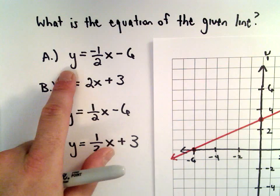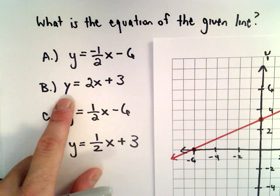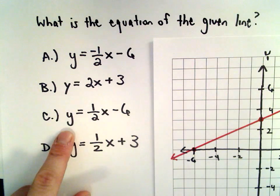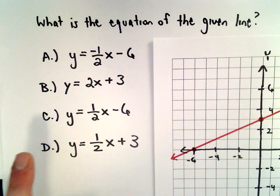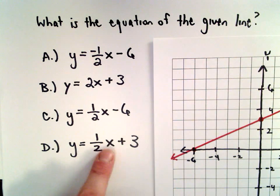So our answer choices are: A, y equals negative one-half x minus 6; B is y equals 2x plus 3; C is y equals one-half x minus 6; and D is y equals one-half x plus 3.